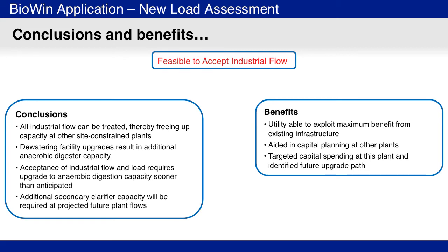Also, the analysis suggested that further into the future, secondary clarifier capacity could become limiting, and hence require upgrading. This analysis allowed the utility to gain maximum benefit from its existing infrastructure, aided in the capital planning at other plants, and identified a future upgrade path at this plant.